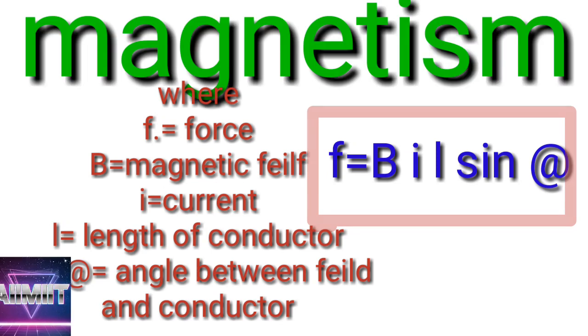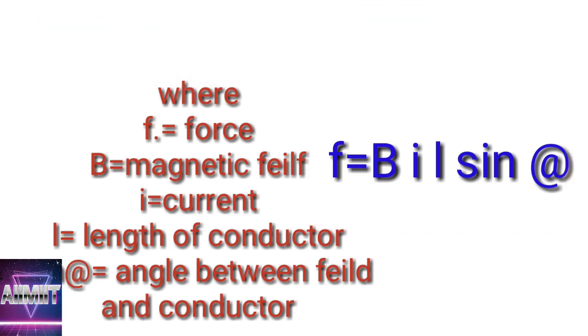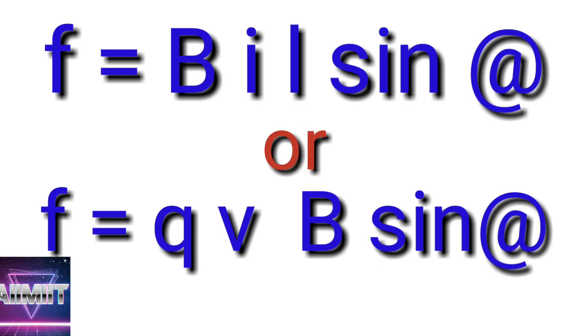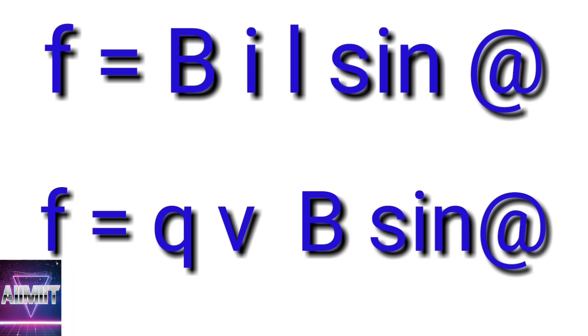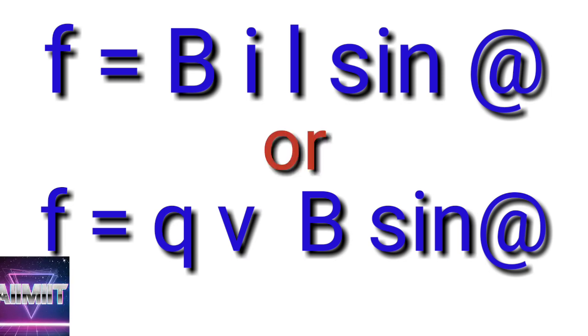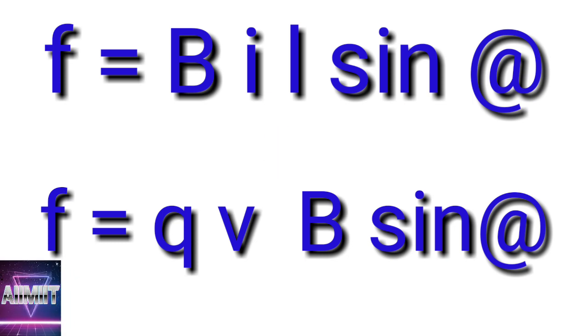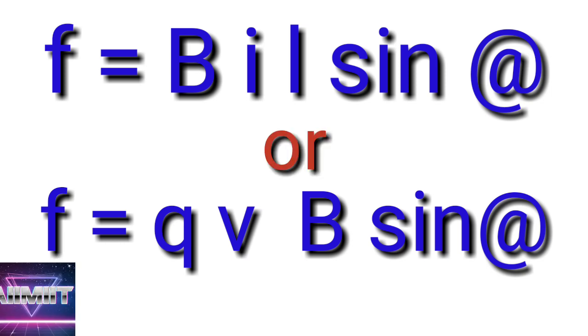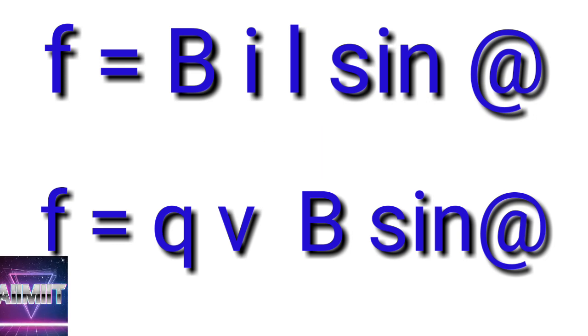From the magnetism lesson, they have not discussed any formulas, but here I am going to discuss one formula which will be helpful to do one of the questions given in the textbook. That is f = BIl sin θ. The 21st formula I am saying is f = BIl sin θ, where f is force, B is magnetic field, I is current, l is the length of the conductor, θ is the angle between length of the conductor and magnetic field. Same formula f = BIl sin θ we can write as Bqv sin θ also, which we'll learn in higher classes.